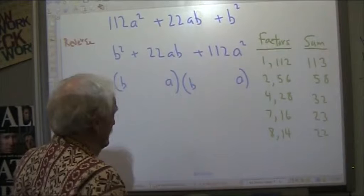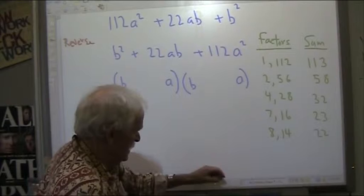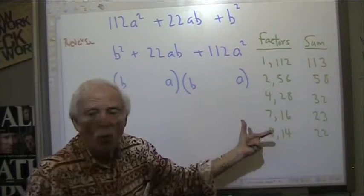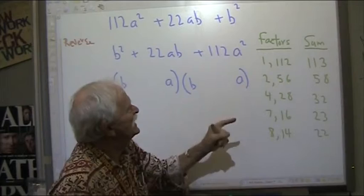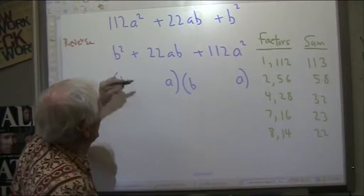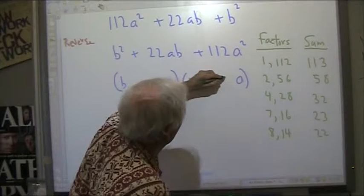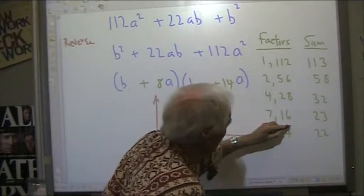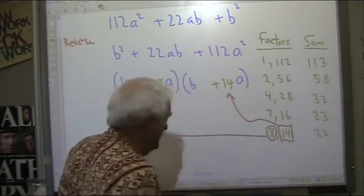All right, so now, once we found the two factors that multiply to give us 112 and add up to give us 22, they go directly into the two binomials with their signs. So here, that goes in as a plus eight. And that goes in as a plus 14. So the plus eight goes right into there. And the plus 14 goes right into there.